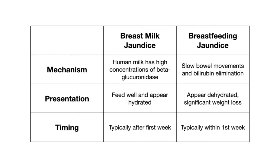Breast milk jaundice and breastfeeding jaundice are commonly tested and important to know when examining a newborn. Breast milk jaundice is thought to be due to the fact that human milk has high concentrations of beta-glucuronidase, the enzyme responsible for converting conjugated bilirubin to unconjugated bilirubin.